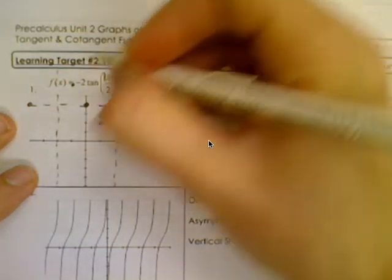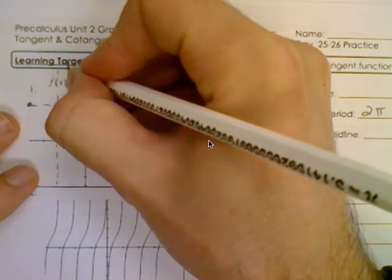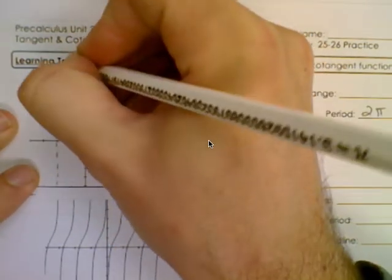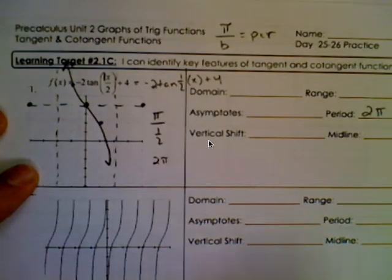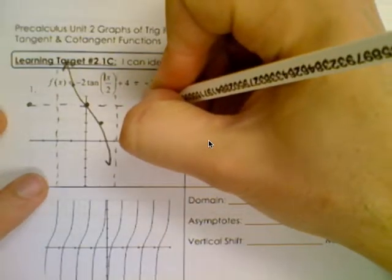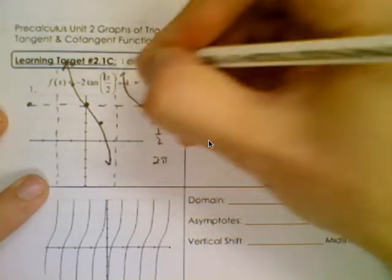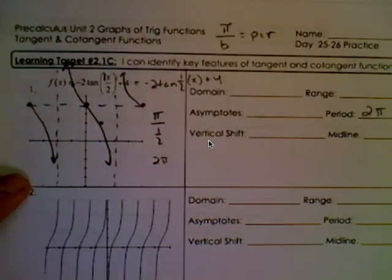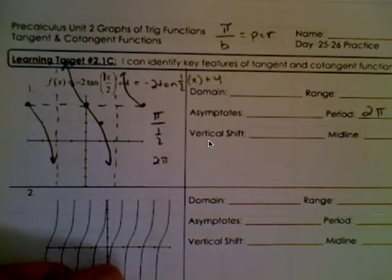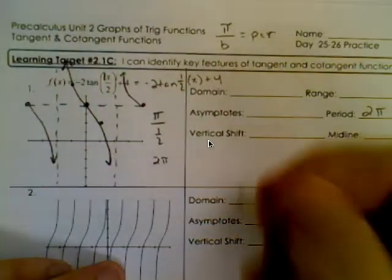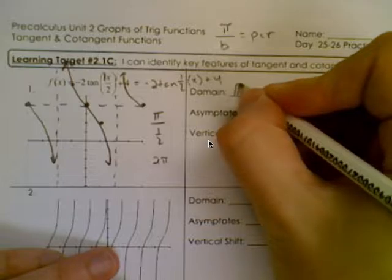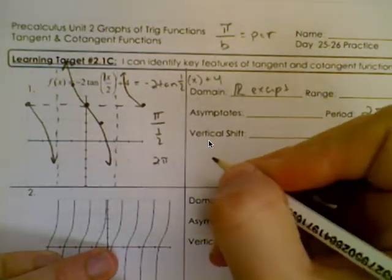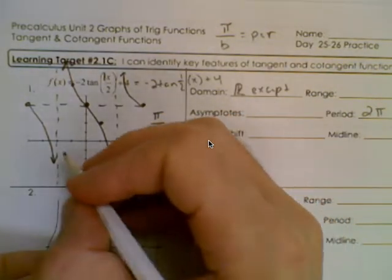Sorry this went off the graph a little bit, but your S-curve will look something like that. And if we wanted to add the rest of it, we could also have graphs going like this on either side. So there's our sketch of tangent. The domain is all real numbers except we're going to throw out values that occur at the asymptotes.